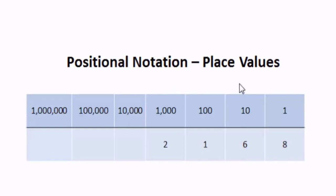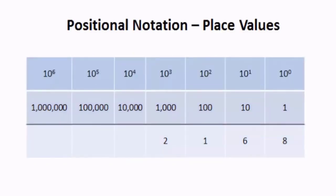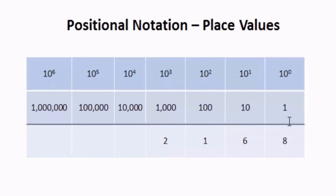When we're talking about the place values in the decimal number system, we're talking about the powers of 10. The ones place is 10 to the 0. The tens place is 10 to the 1. The hundreds place is 10 to the 2, or 10 times 10, which is 100. The thousands place is 10 to the 3, or 10 times 10 times 10, and so on. So you can see that the place values are based on powers of 10.